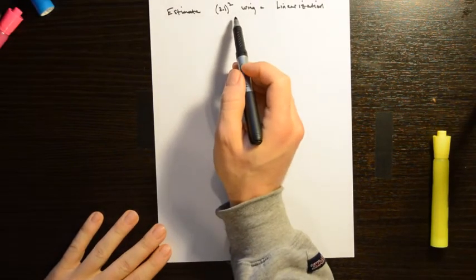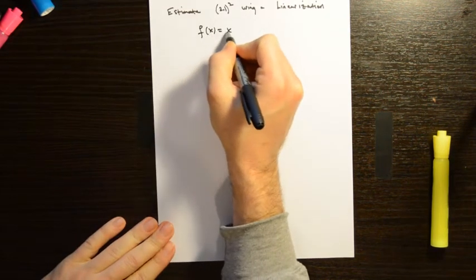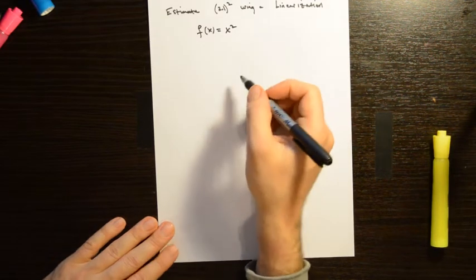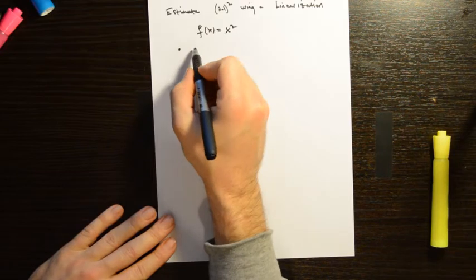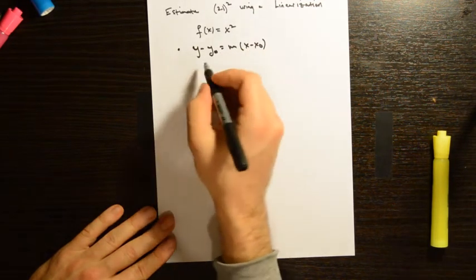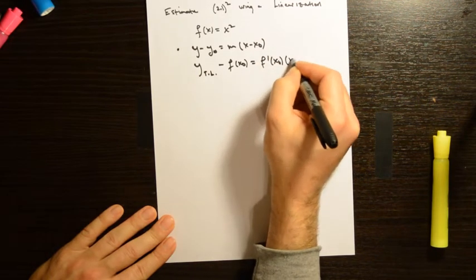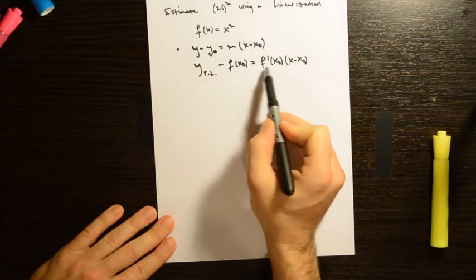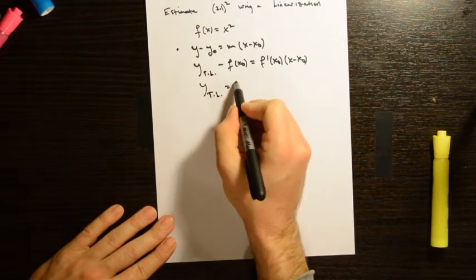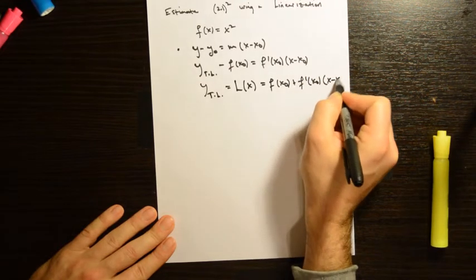We want to estimate 2.1 squared using a suitable linearization. In this case we'll choose the function f of x equals x squared, and find a tangent line at a point near 2.1 where we can evaluate all the components nicely. The form of our tangent line is y minus y₀ equals m times x minus x₀ — the point-slope form — and the tangent line formula is f of x₀ plus f prime of x₀ times x minus x₀. We use the derivative to evaluate the slope of the curve. The linearization L of x equals f of x₀ plus f prime of x₀ times x minus x₀.